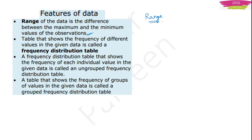The second term you should know is frequency. In physics, frequency means number of waves. But here in mathematics, frequency means the number of times the observation has occurred — how many times that observation has come in the data. That is known as frequency.